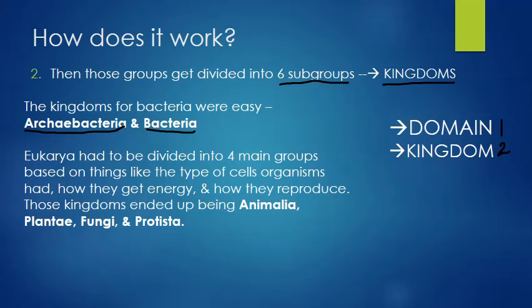But Eukarya has so much diversity that it had to be divided into four main groups. They decided on those groups based on things like the type of cells that the organisms had, how they get energy, how they reproduce, whether they have only one cell or multi cells, things like that. And those kingdoms are Animalia, which is our kingdom, Plantae, which is plants, Fungi, which is fungus, and Protista.